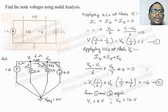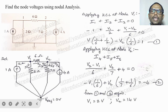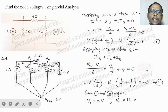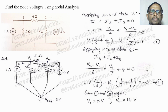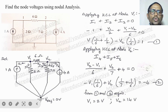Now write down the nodal analysis. Nodal analysis means applying KCL plus Ohm's law. Applying KCL at node V1: the algebraic sum of currents at a node is equal to zero. So I1 plus I2 plus I3 equals zero.